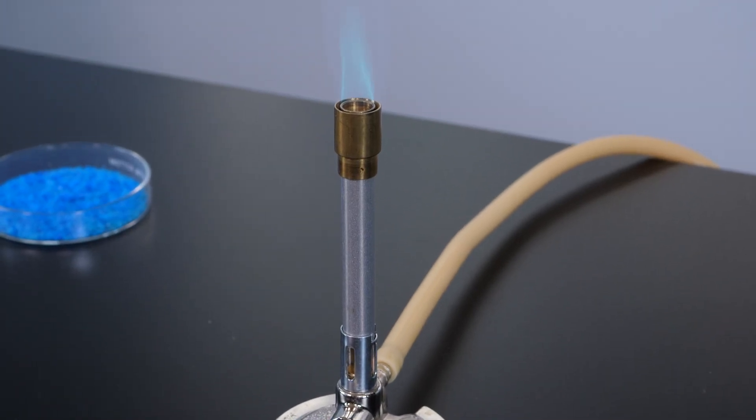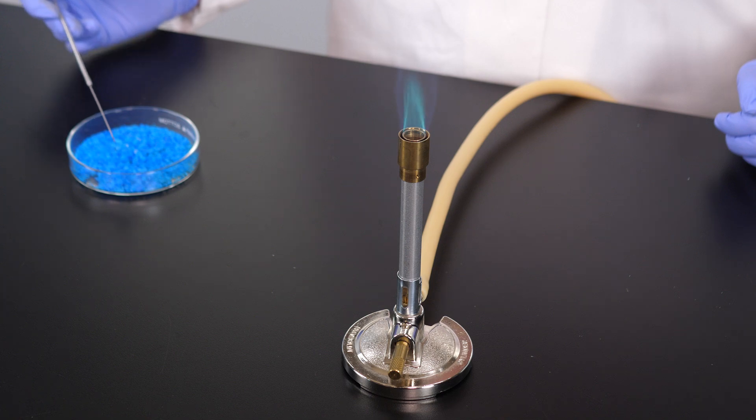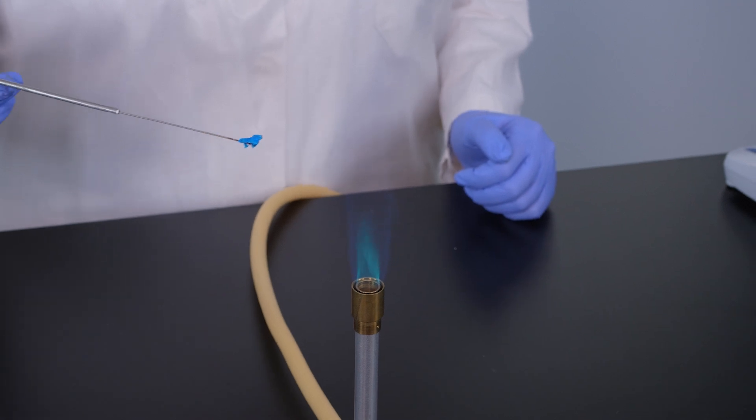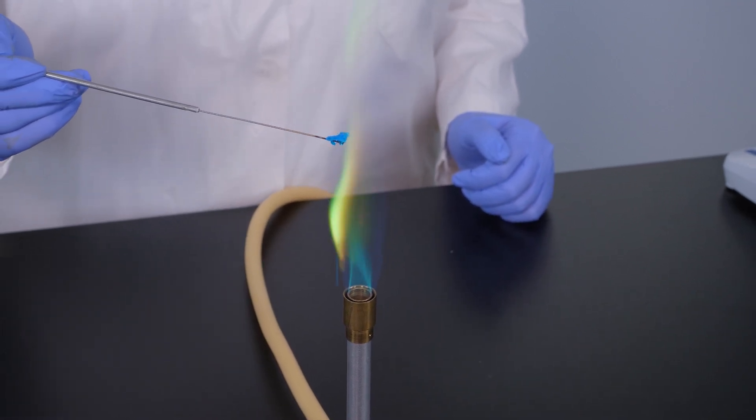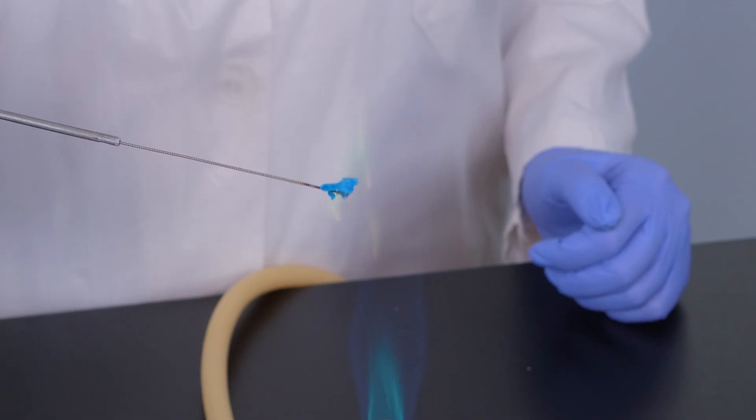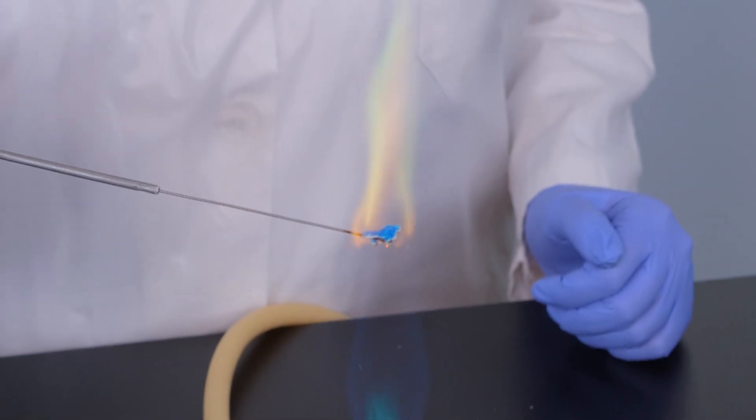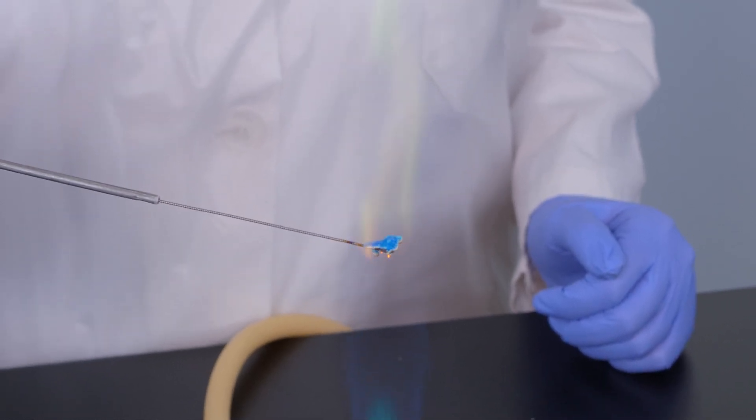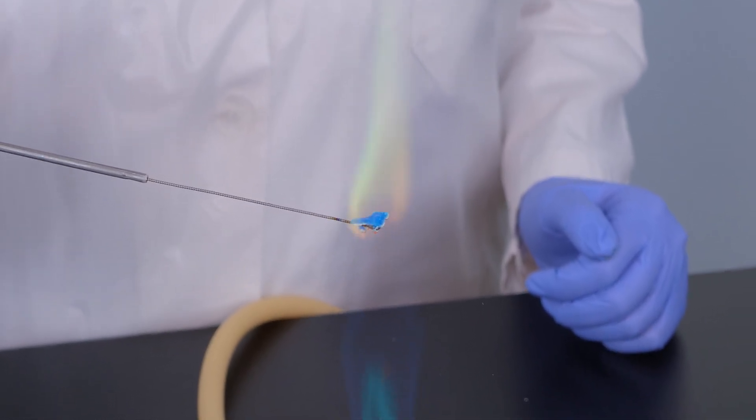Let's begin with a flame test. To conduct a flame test, we hold a crystal of the substance in the flame of the Bunsen burner. According to our data, when copper sulfate pentahydrate is added to the flame, the flame should burn with a green-yellow color. As we can see, the flame turns a green-yellow color. This test alone is not sufficient to prove the unknown substance is copper sulfate pentahydrate, because other substances also cause a flame to turn a similar color.